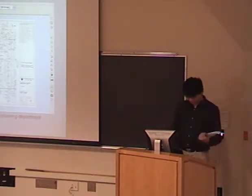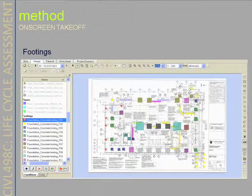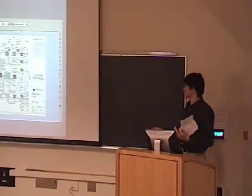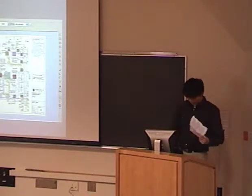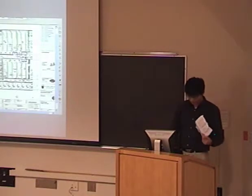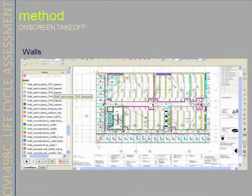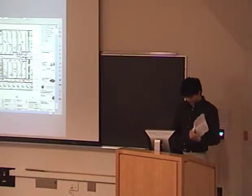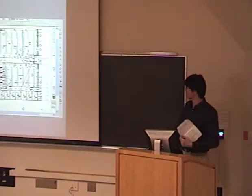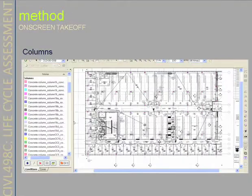Here is an example of the building, which is measured and labeled by the compound condition in the software. Here is another example of walls, which are measured and labeled by the linear condition in the software. And here again are the columns in the building, which are measured in a similar way.